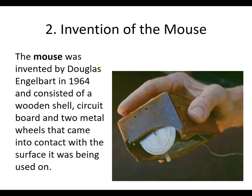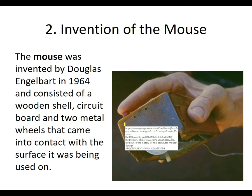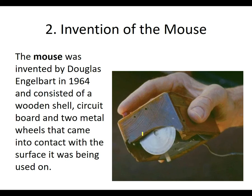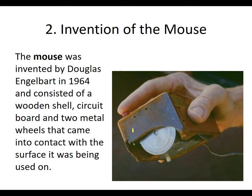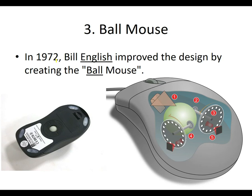The invention of the mouse was a much better way to go. The mouse was invented by Douglas Engelbart in 1964 and consisted of a wooden shell, a circuit board, and two metal wheels that came into contact with the surface it was used on. It had a little button, and that button did essentially the same as what a mouse button does today.